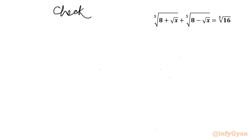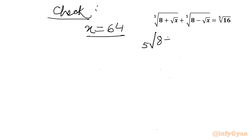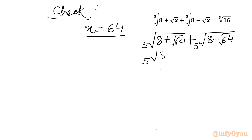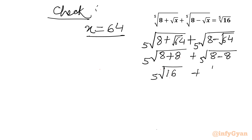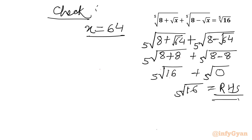Let us verify: for x = 64, we have 5th root of (8 + √64) + 5th root of (8 − √64) = 5th root of (8 + 8) + 5th root of (8 − 8) = 5th root of 16 + 5th root of 0 = 5th root of 16, which equals the RHS. Hence this value is verified and true.